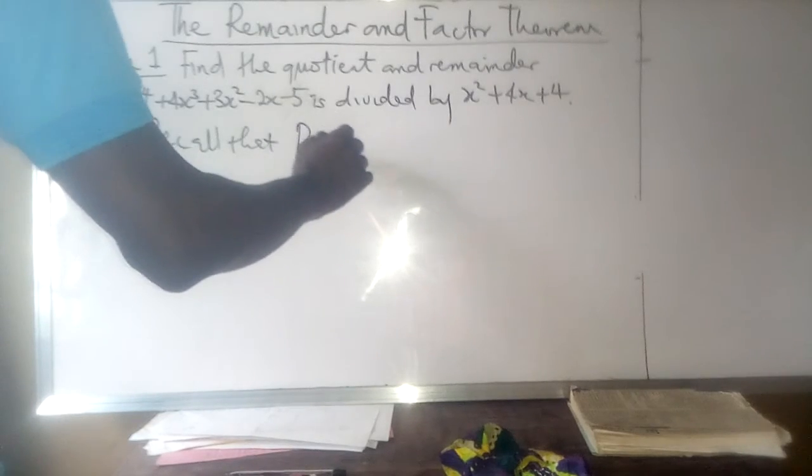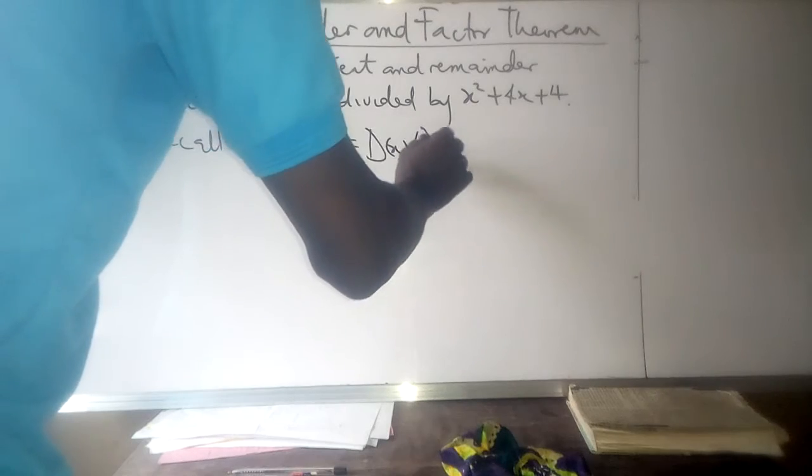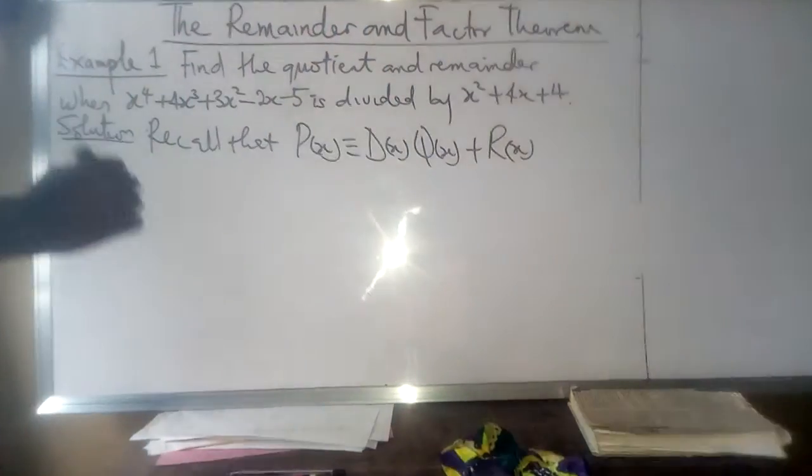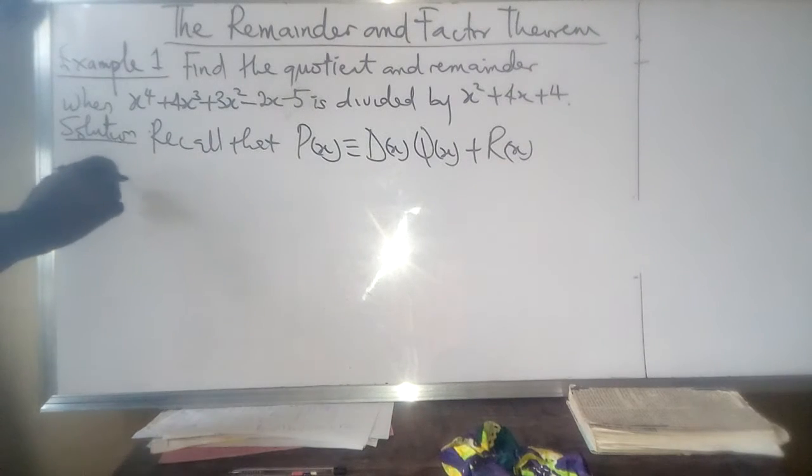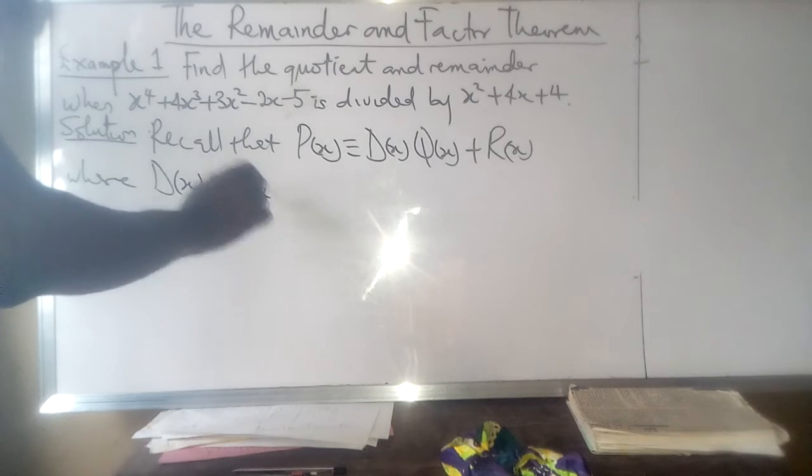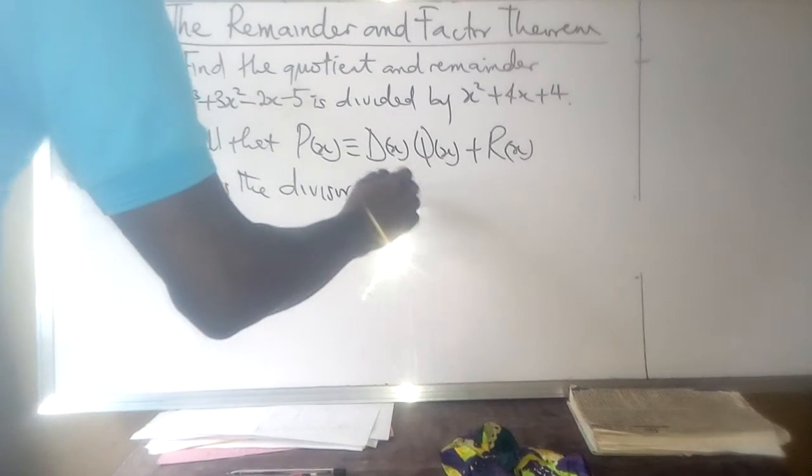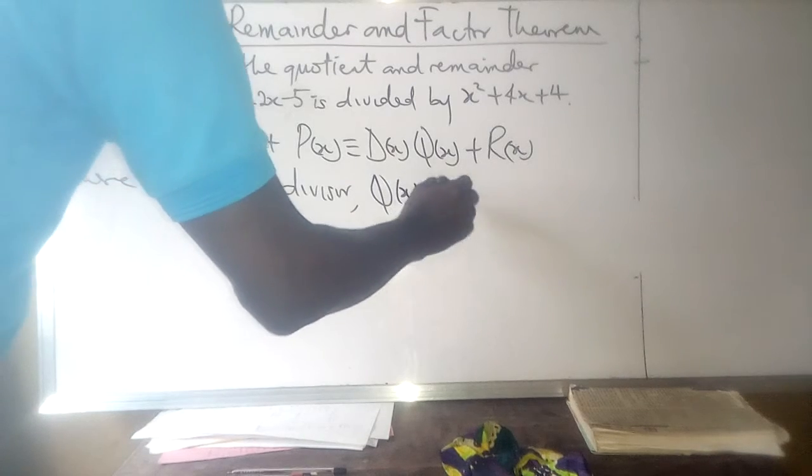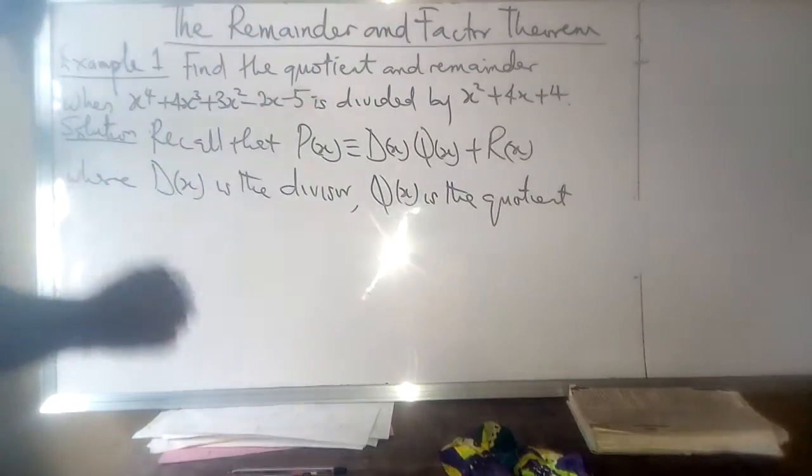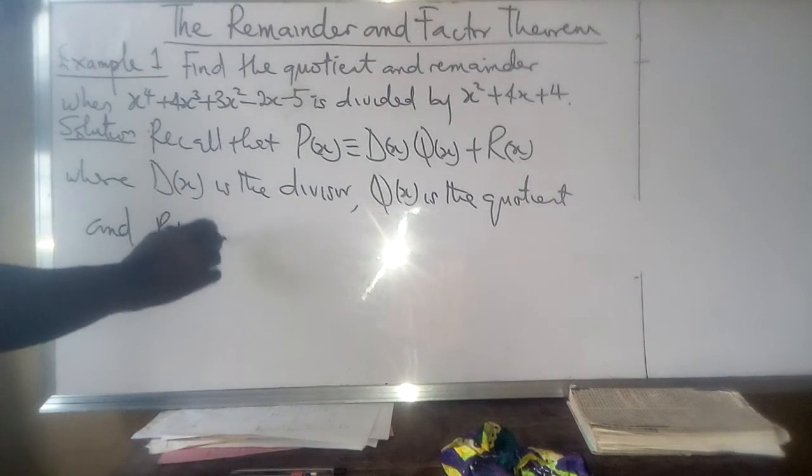is equivalent to D(x) multiplied by Q(x) plus R(x), where D(x) is the divisor, Q(x) is the quotient (the value you obtain after division), and R(x) is the remainder.